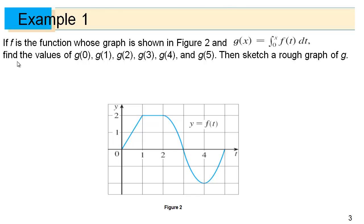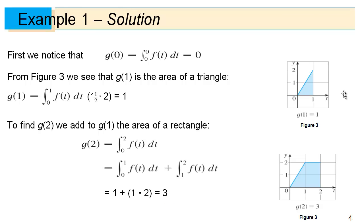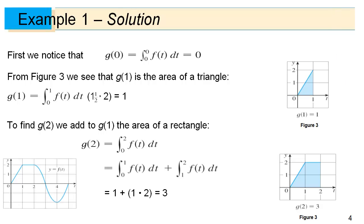Let's look at an example. If f is a given function and g is defined as the integral from 0 to x, then we can find the values of g of 0, g of 1, all the way up to g of 5, and sketch a rough graph of this area function. First we notice that g of 0 equals 0 because we are finding the area under f from 0 to 0. No matter what the function looks like, if you start at 0 and end at 0 you have no width, so the area is 0.